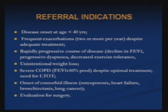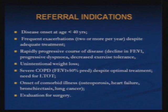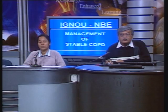There are certain indications where these patients must be referred to a specialist. Usually received from general physicians, indications for referral include: disease onset less than 40 years, frequent exacerbations — two or more per year — despite adequate treatment, rapidly progressive course with declining FEV1, progressive dyspnea, decreased exercise tolerance, unintentional weight loss, severe COPD with FEV1 less than 50 percent despite optimal treatment, need for LTOT, and onset of comorbid illnesses like osteoporosis, heart failure, bronchiectasis, or lung cancer.